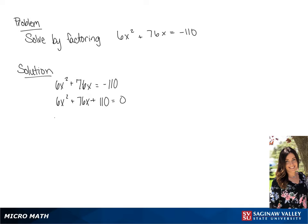Next we're going to pull a 2 out of the equation. So we have 2 times 3x squared plus 38x plus 55 equals 0.